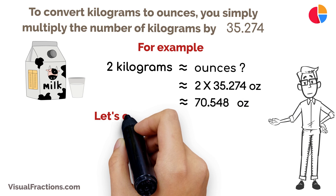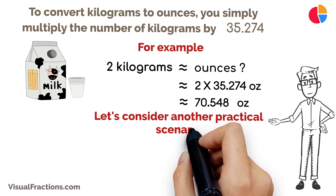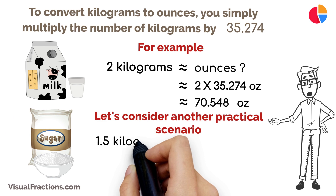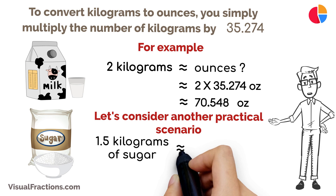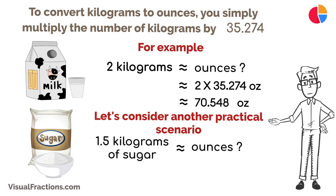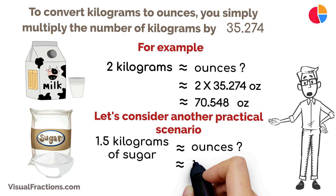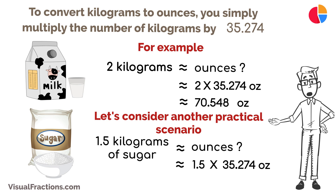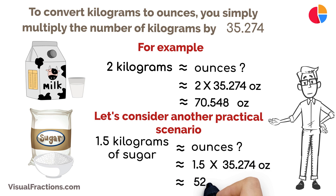Let's consider another practical scenario. If you're baking and your recipe calls for 1.5 kilograms of sugar, but your measurements are in ounces, it's straightforward. Just multiply 1.5 kilograms by 35.274 to find out that you need about 52.911 ounces of sugar.